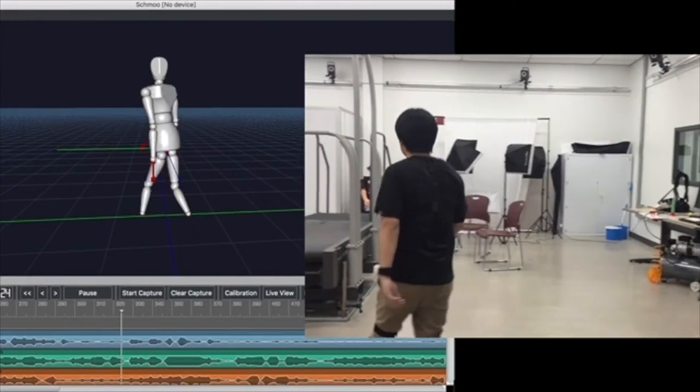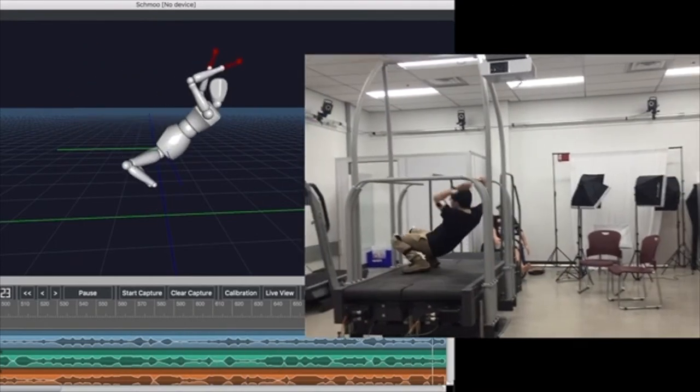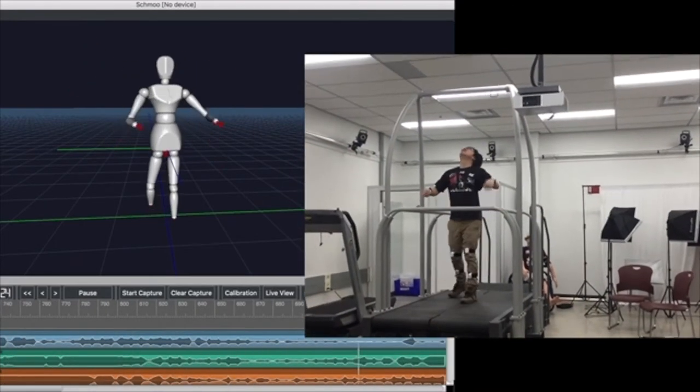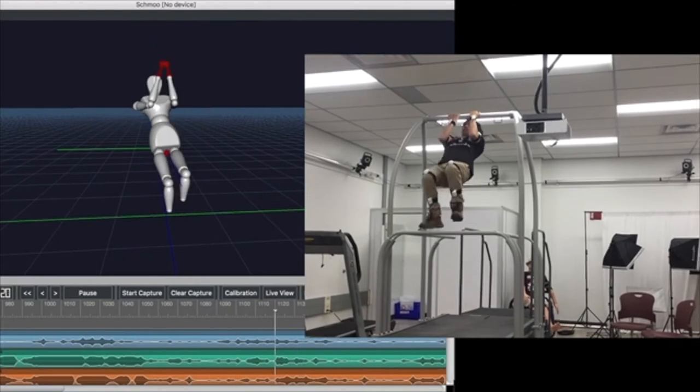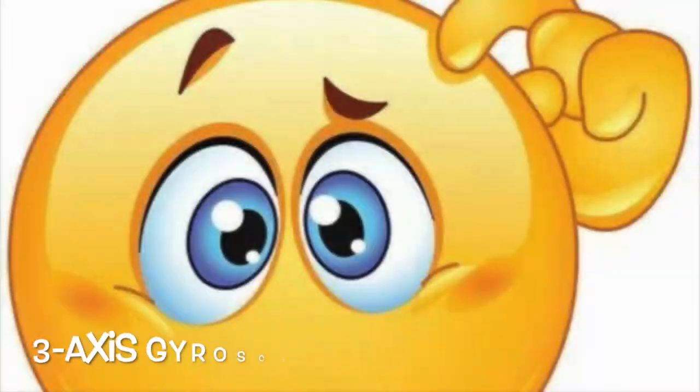Inertial Measurement Unit, so we have three axis gyroscope, three axis accelerometers. We integrate their response and then find out the displacement and orientation of every limb on the human body.